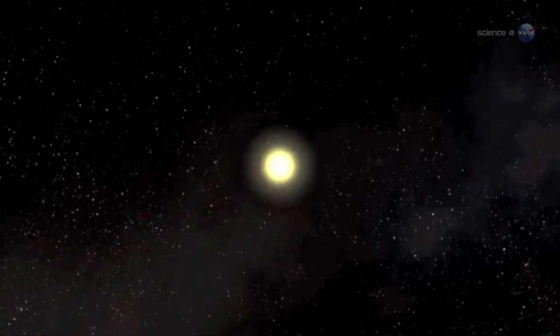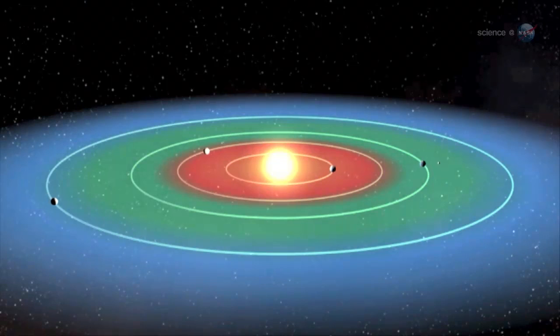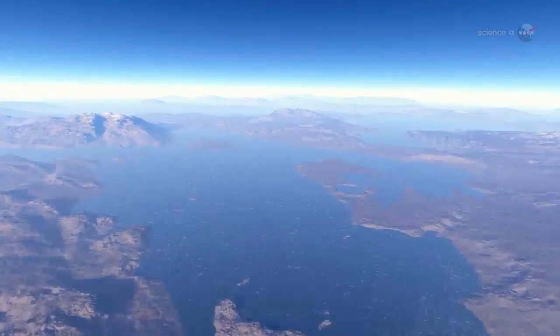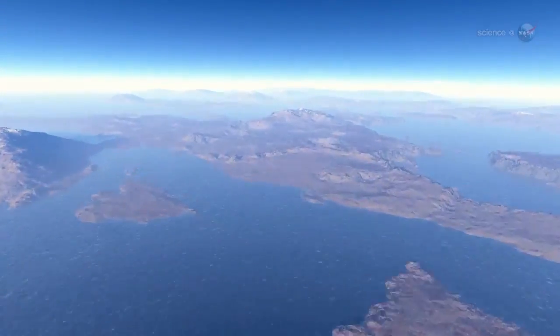Four of the new planets are less than two and a half times the size of Earth. Moreover, they orbit in their sun's habitable zone, where the surface temperature of the planets may be suitable for liquid water, a key ingredient for life as we know it.